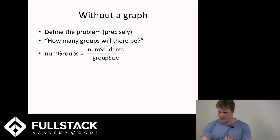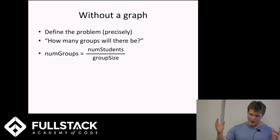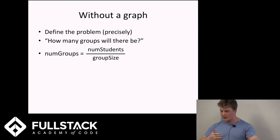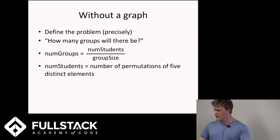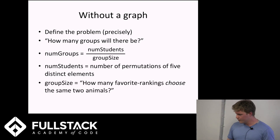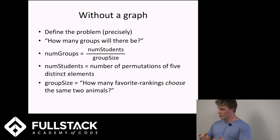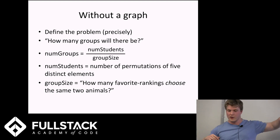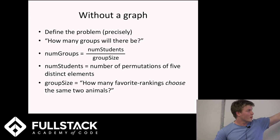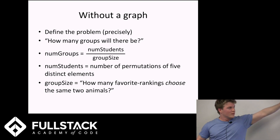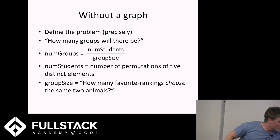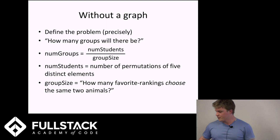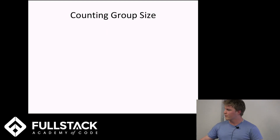We know the number of students is every rank order of five things — that's 120, or five factorial. But the group size is another question entirely: how many favorite rankings choose the same two animals? This question is a lot easier to solve and is really the key to unlocking the answer. To answer the first question, we answer the second question and get that ratio.